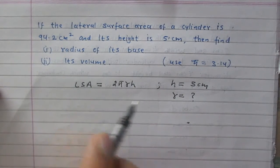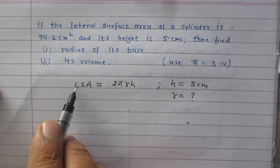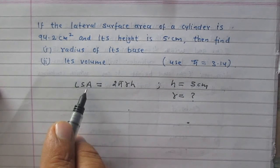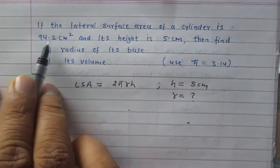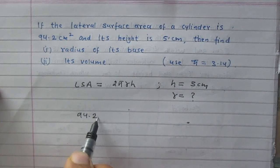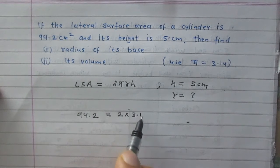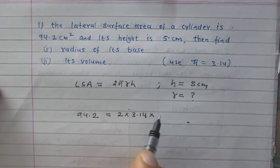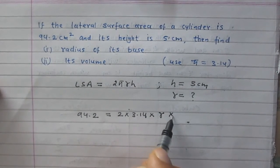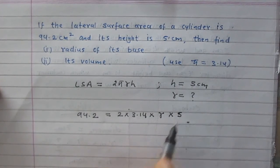Now after substituting the values, lateral surface area is 94.2. So 94.2 equals twice of 3.14, r stands for the radius, and h value is 5.